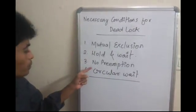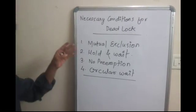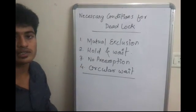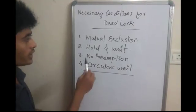These are four conditions which should occur simultaneously for deadlock to occur. Let us see what is mutual exclusion.